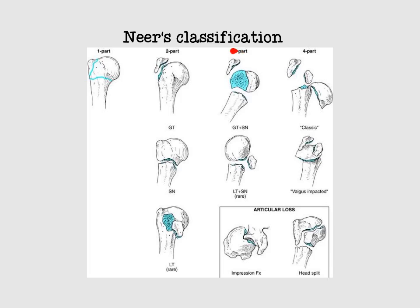A three-part fracture means two lines of fracture and three fragments. For example, the greater tuberosity, the rest of the humeral head, and the shaft — giving three separate parts.